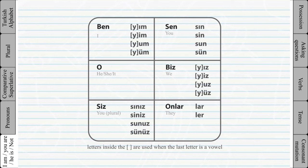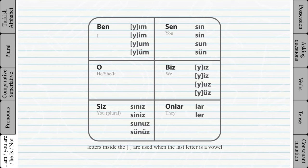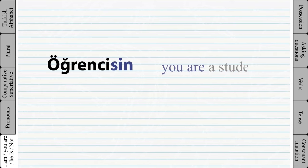Look at this table to see all the personal endings. The letter 'y' is used when the last letter of the word is a vowel and the personal suffix also starts with a vowel — 'y' works as a buffer between the two vowels. In Turkish, two vowels should not come after one another.